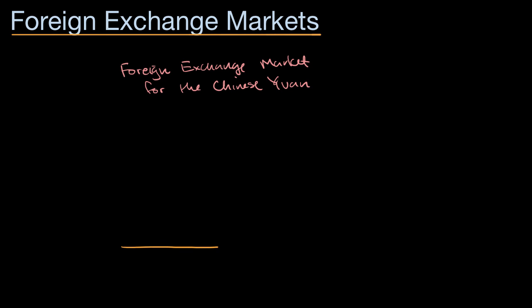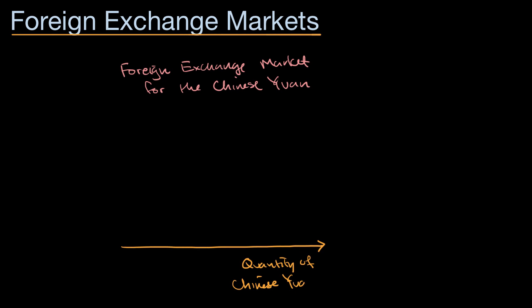Let's think about the horizontal axis — when we're thinking about most markets, that is our quantity axis. Here, we're going to think about the quantity of Chinese yuan. And then our vertical axis, we're essentially going to be thinking about the price of the Chinese yuan. How do you think about the price of a currency? We're going to think of it in terms of another currency, and for the sake of this video, that other currency is going to be US dollars per Chinese yuan.